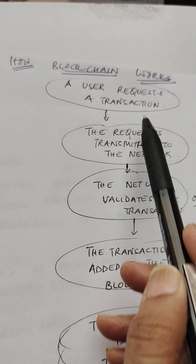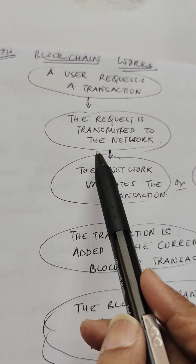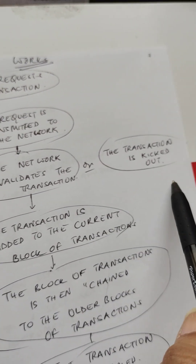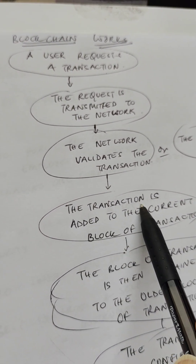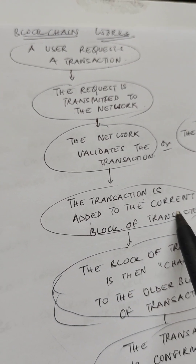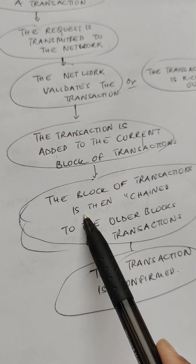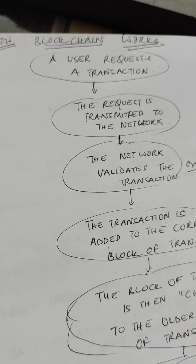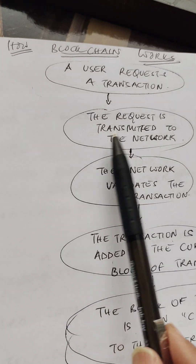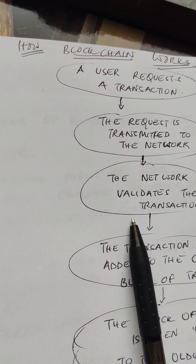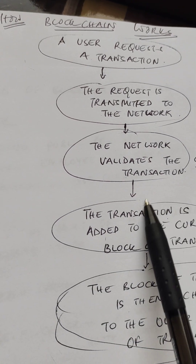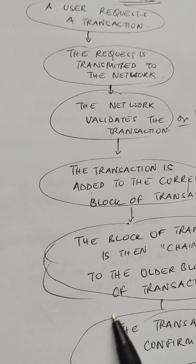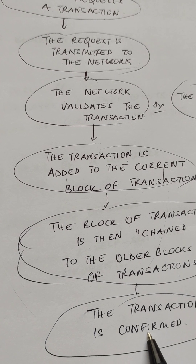Here is how blockchains come to agreement: first, a user requests a transaction. Second, the request is transmitted to the network. Third, the network validates the transaction — if not accepted, it is kicked out. Fourth, the transaction is added to the current block of transactions. Fifth, the block of transactions is then chained to the other blocks. Finally, the transaction is confirmed.